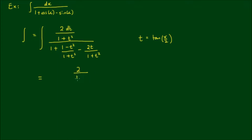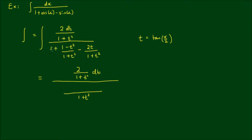Let's leave the 2/(1 + t²) dt on top, and find a common denominator of (1 + t²) for the denominator terms. We multiply the 1 by (1 + t²), giving us (1 + t²) at the front, plus (1 - t²), minus 2t.